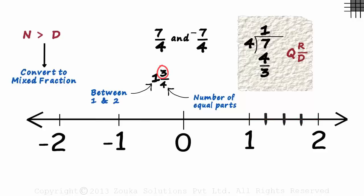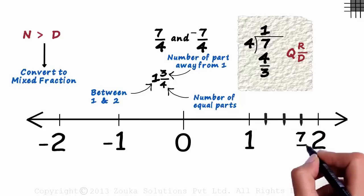The numerator of the proper fraction tells us the number of parts from the first whole number. So it is 3 parts away from 1. So we mark 7 by 4 here.